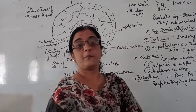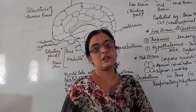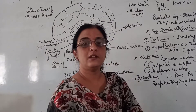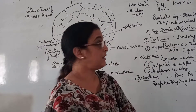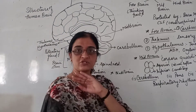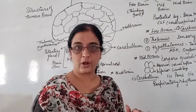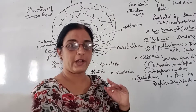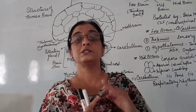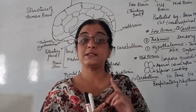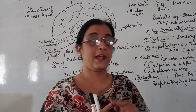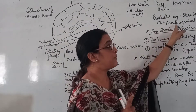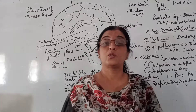After the skull protection, there are three layers. The three layers are: the outermost layer is called dura mater, the middle layer is called arachnoid, and the innermost layer is called pia mater.